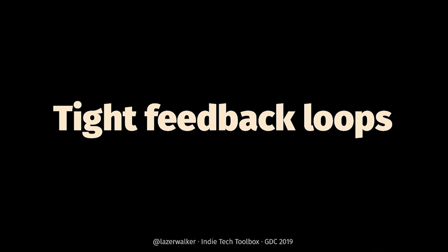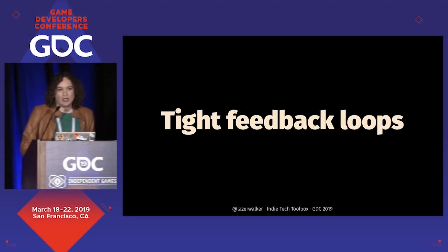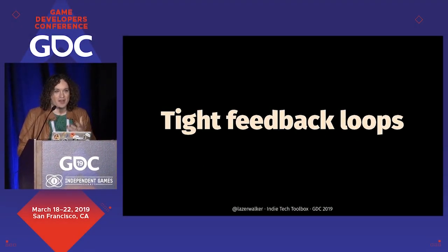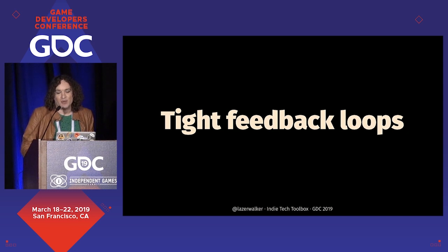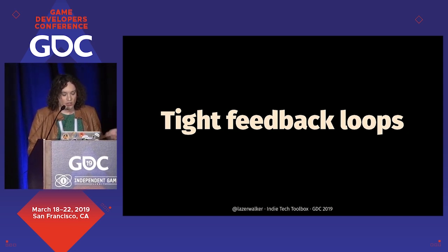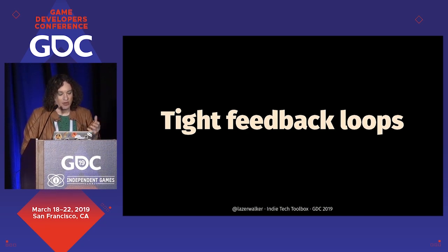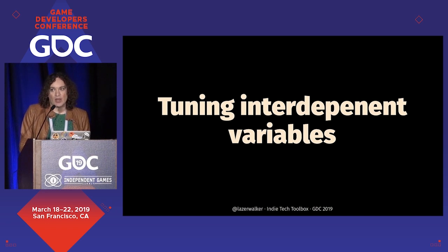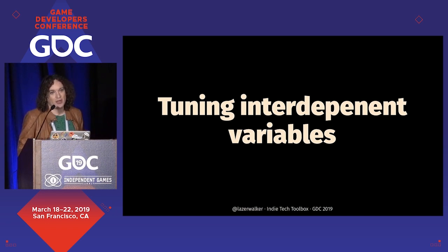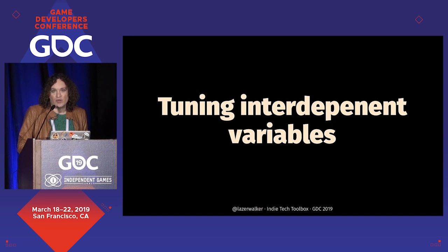Tight feedback loops are amazing. If you've ever had to stop your game while it's running, change a number in code, and then restart the game, you know that absolutely kills your ability to be creative and try things. Things are naturally a little better in Unity if you're using the inspector window at runtime, but it's still not great. Some people wire up the keyboard to do something similar. But a media controller gets really interesting when you're tuning complex sets of variables that are related to each other. I worked a lot on a cartoony kart racer — we cared about max velocity, acceleration, and turn speed, but we cared less about the individual values than the relationship between them, which is really hard to tune when you can only change one value at a time.